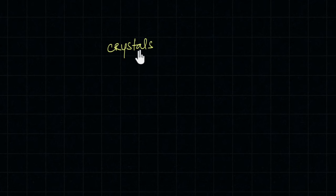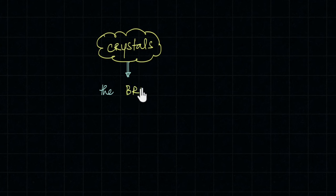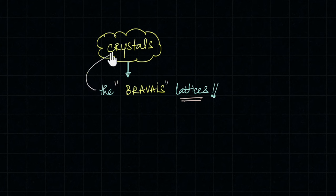We are now going to talk about crystalline solids — we can simply call them crystals — in much greater detail. When we do that, there is a particular term that keeps cropping up: the Bravais lattices. In this video, we are going to try and understand what lattices are, what it means to call a lattice a Bravais lattice, and how they are related to the study of crystals.